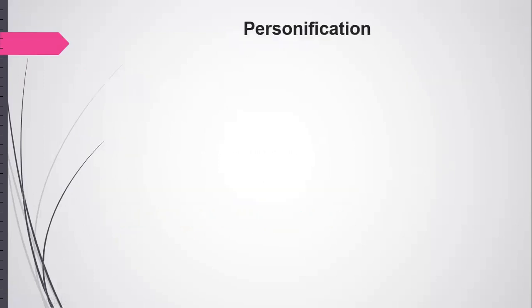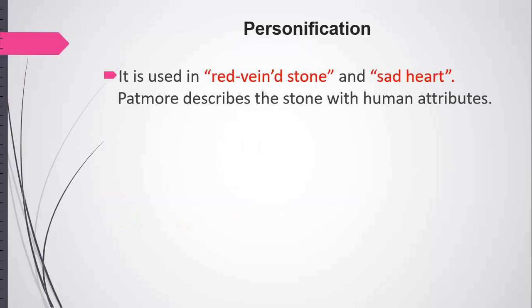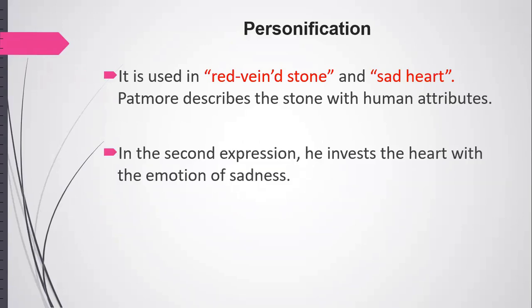Another device is personification. When we talk about personification, it means human attributes that have been depicted in non-human beings. It is used in 'red vein stone.' The poet describes the stone with human attributes. In the second expression, he invests the heart with the emotion of sadness.